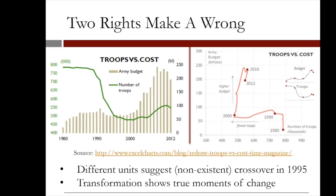On the right is the same data presented in a different way. We now have troops on the x-axis and dollars on the y-axis. The line moves through time, allowing us to see when moments of change occurred, such as decreases in troop count through the 90s at the end of the Cold War, the increase in spending of the 2000s, and the recent decreases in military spending.